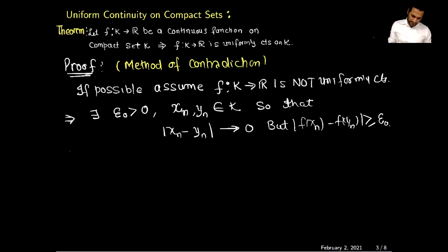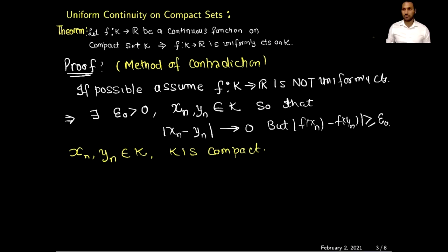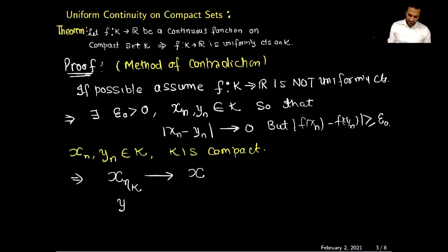Now notice that sequences xn and yn belong to K, and K is compact. Using the definition of a compact set: if you have sequences xn and yn in the set and the set is compact, there exists a subsequence x sub nk which is convergent and converges to some x. There also exists a subsequence y sub nk which is also convergent, and it converges to the same limit. The reason is the difference between xn and yn goes to 0 as n goes to infinity, so we can easily prove that both subsequences converge to the same limit x.